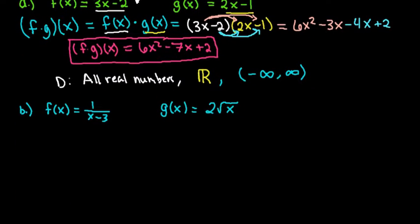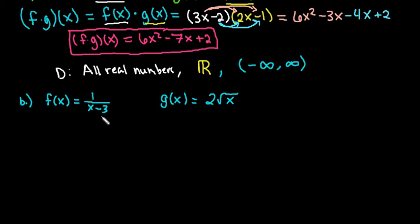For the next one, this one is going to have a little bit different of a domain because we do have more restrictions on our equation since I have a rational function times a radical function. So as far as doing the multiplication goes, it's still the same thing. I would just do f times g of x.